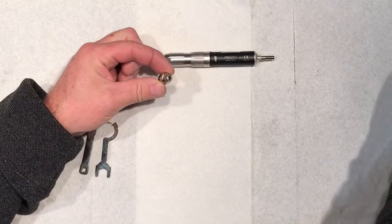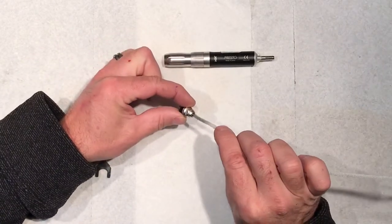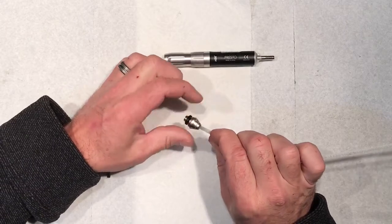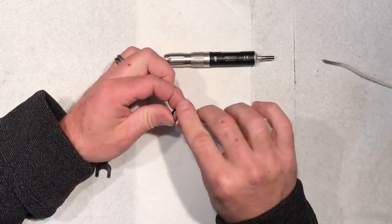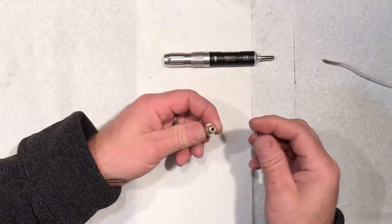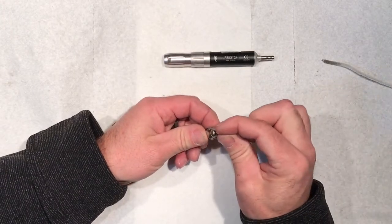First thing I'm going to do is just take a pipe cleaner and run it down through the middle just to make sure it's clean. Next thing I'm going to do is stick the Presto chuck in there all the way.